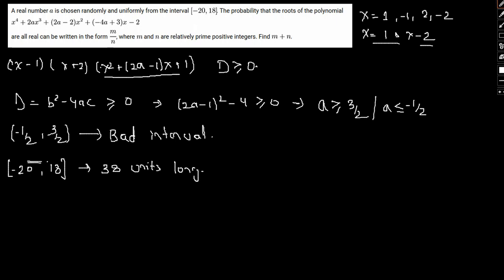So while the bad interval is 2 units long. So if we again count the bad interval, so bad interval doesn't include both minus 1 by 2 and 3 by 2. So if we count in the number line, this interval is nothing but 2 units long.